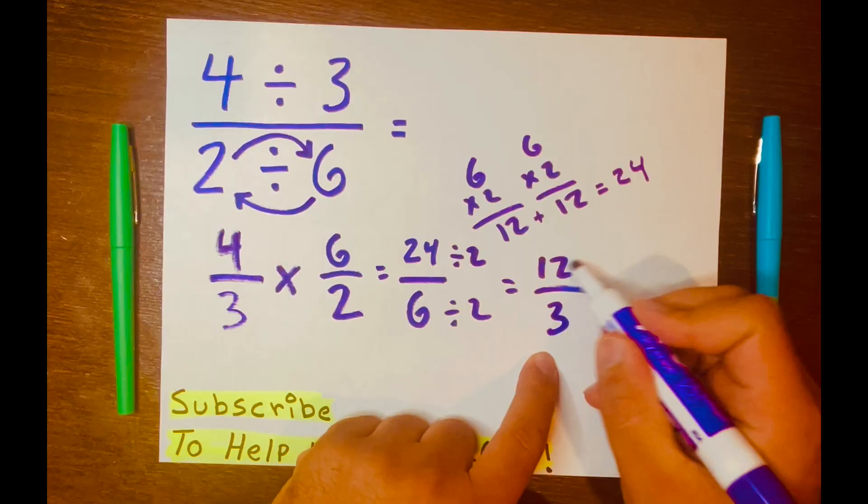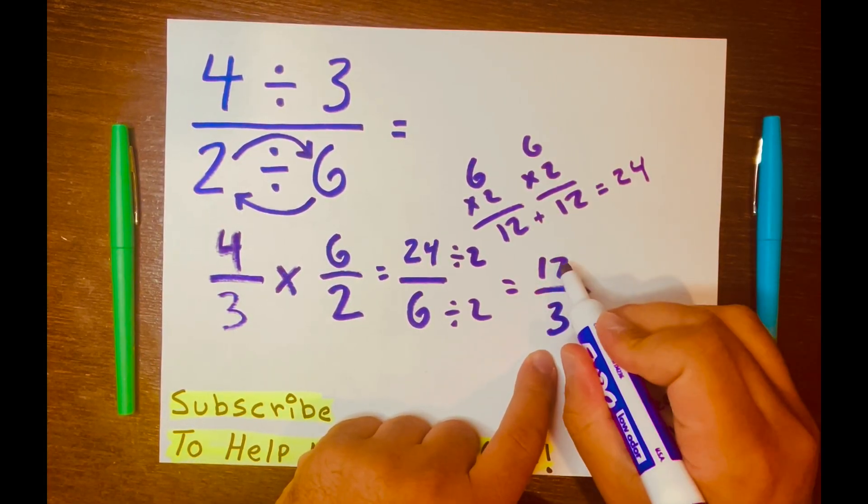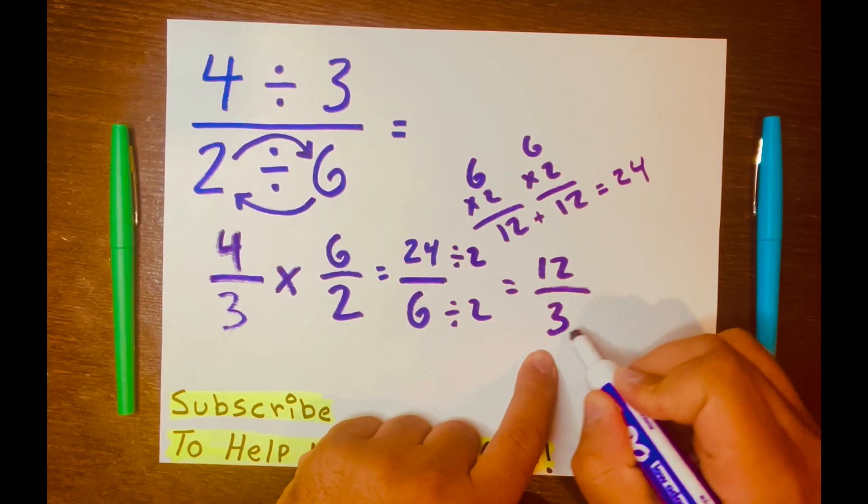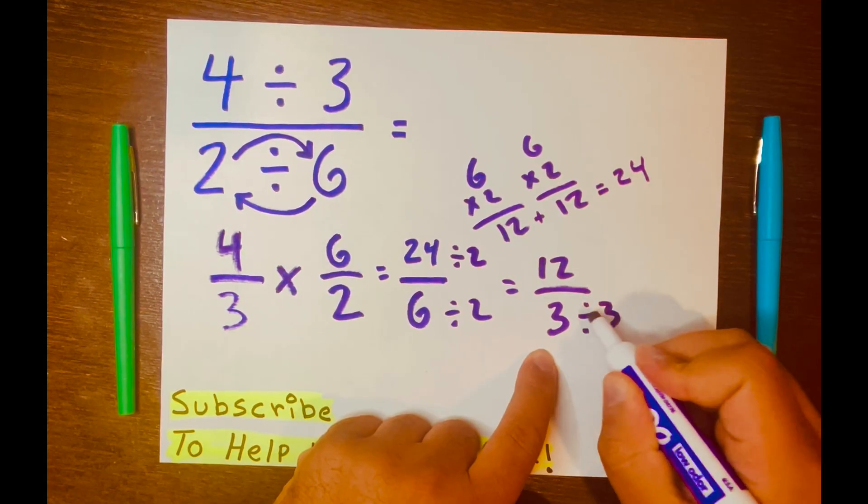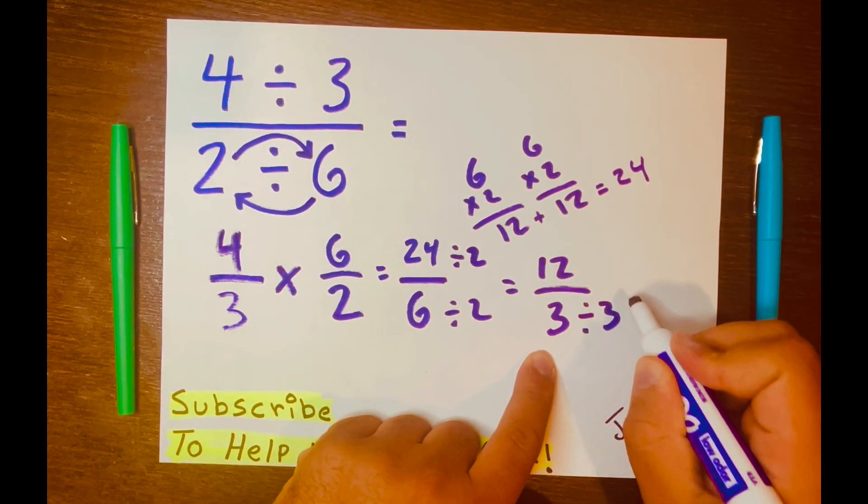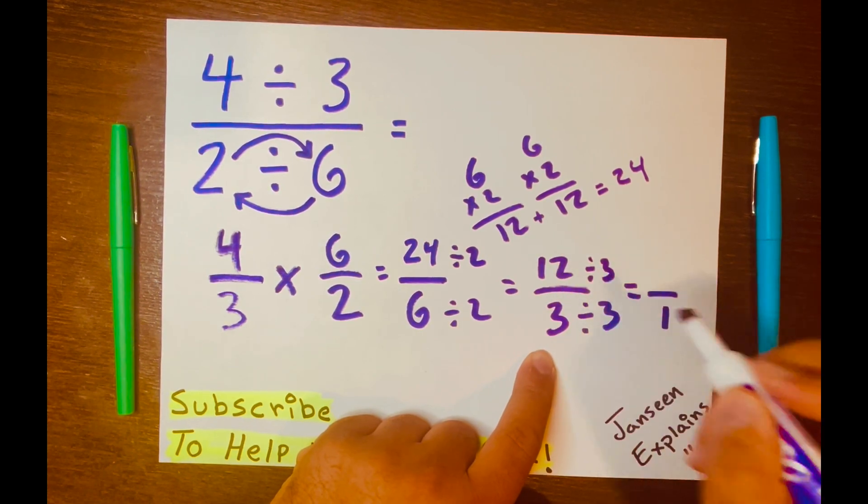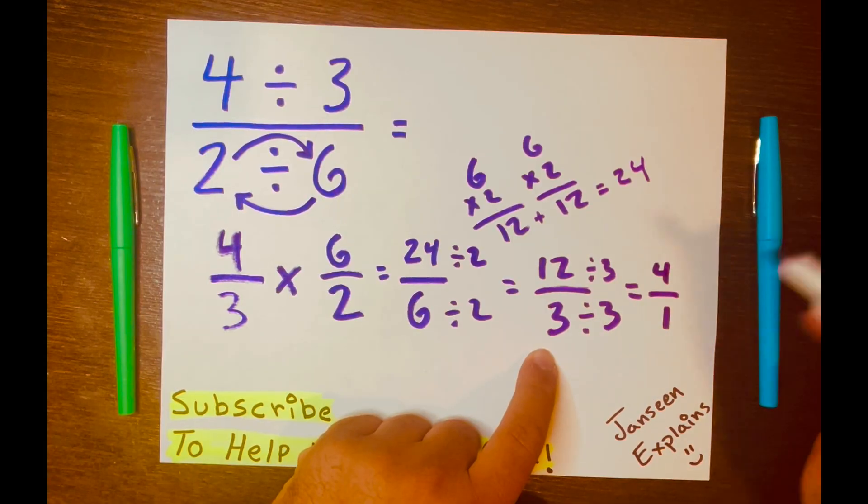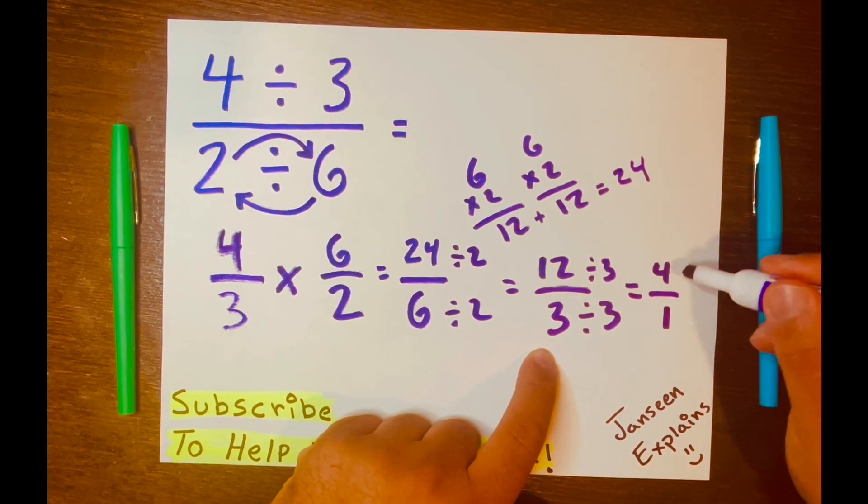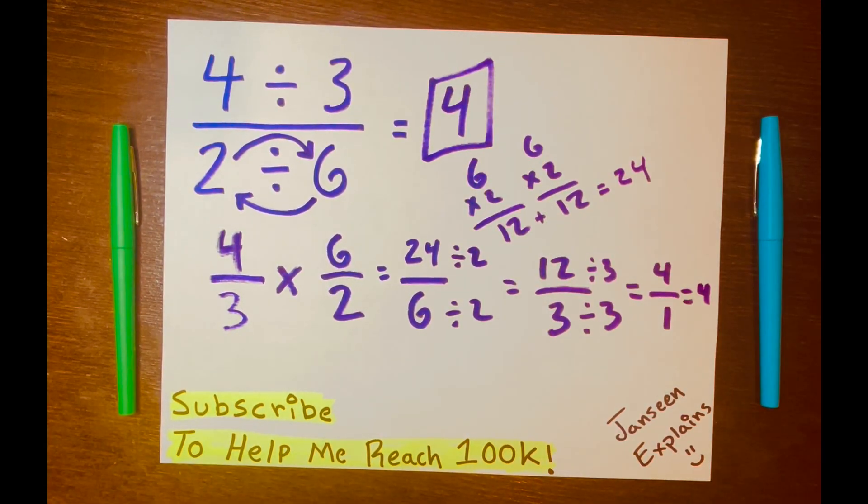And now we have 12 over three. And let's go ahead and keep breaking it down. So 12 divided by three or 12 over three, we can divide by three. So three divided by three gives you one and 12 divided by three gives you four because four times three equals 12. And we know that four over one equals four. So your answer is four. And there you go.